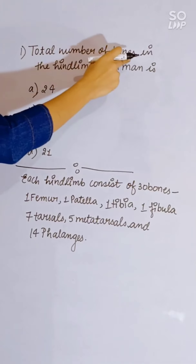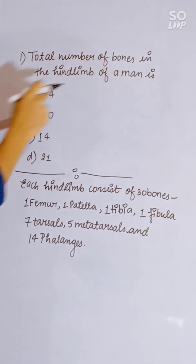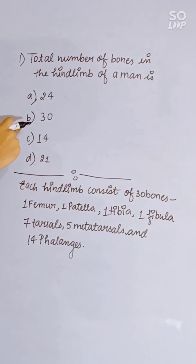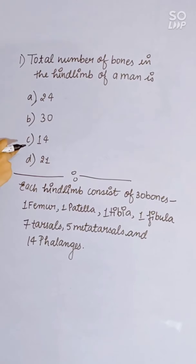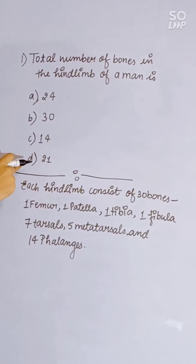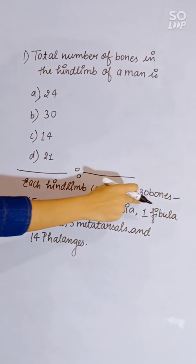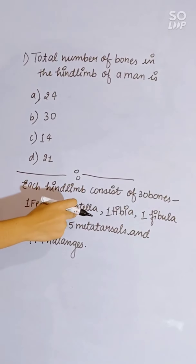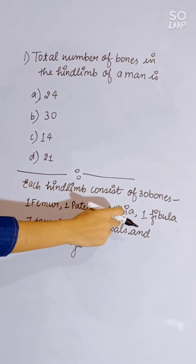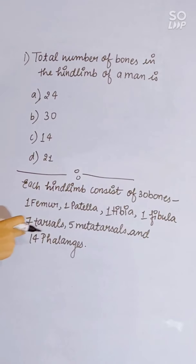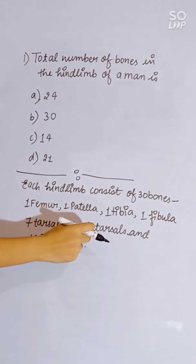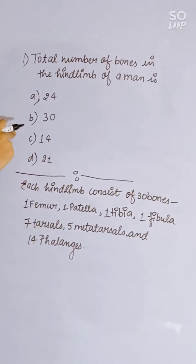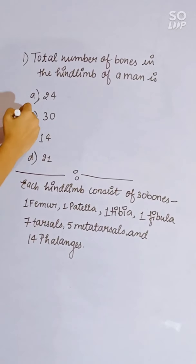Total number of bones in the hind limb of man is: 24, 30, 14, or 21. Each hind limb consists of 30 bones: one femur, one patella, one tibia, one fibula, seven tarsals, five metatarsals, and 14 phalanges. Correct answer is B, 30.